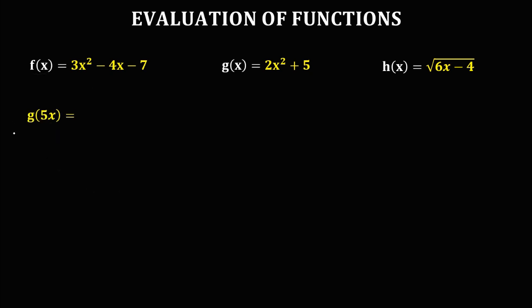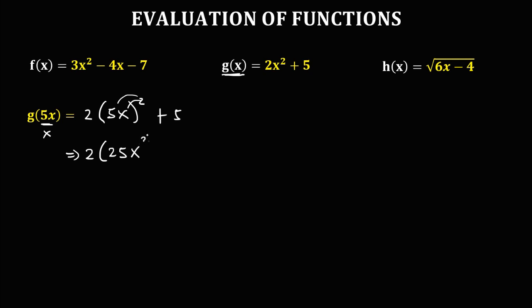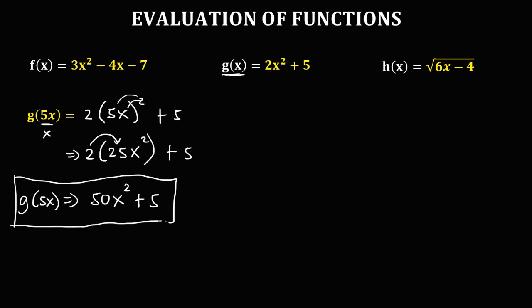For g of 5x: from g of x, x is equal to 5x, so we have 2 times (5x) squared, then plus 5. Simplifying: the square of 5x gives 25x squared, so 2 times 25x squared plus 5. Therefore, g of 5x is equal to 50x squared plus 5.